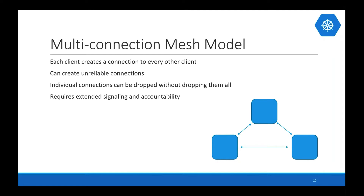Next is connecting more than just two peers. The first approach is the mesh model, where each client creates a direct connection to every other client. It looks fine with three peers, but when you add 10 to 20 connections, each peer needs to maintain a connection to all other peers. One issue is that individual connections can drop without dropping all connections — there are accountability issues in maintaining connections and you have to write defensive code around that.